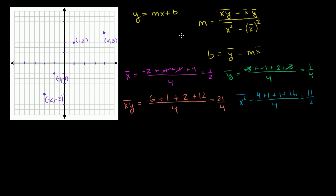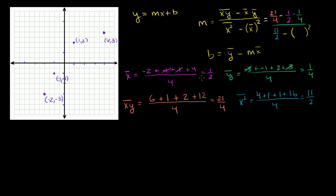So we're now ready to calculate the actual slope. The slope m is going to be the mean of the xy's, which is 21 over 4, minus the mean of x times the mean of y — that's 1 half times 1 fourth — all of that over the mean of the x squareds, which is 11 over 2, minus the mean of the x's squared, which is 1 half squared.